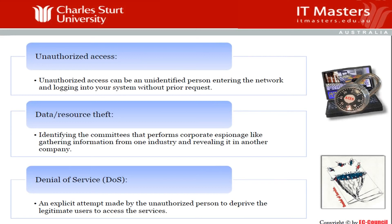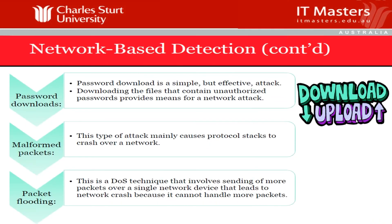Examples of what network-based detection monitors: why is someone trying to dump the password file — the SAM file; why is a computer trying to get access to a VLAN it's not allowed to connect to; why are there too many failed access attempts from a specific IP address. Password downloading is simple but effective — someone can download the file containing password hashes, and the IDS can detect that and block it.